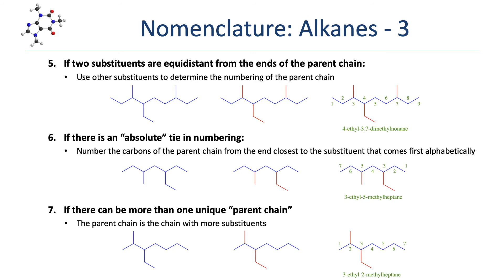When alphabetizing substituents, counter prefixes like 'di,' 'tri,' and 'tetra' are ignored. So ethyl comes before dimethyl alphabetically because we compare 'ethyl' to 'methyl,' not to 'dimethyl.' There is no such thing as a dimethyl group — dimethyl simply tells you there are two instances of methyl groups. We're alphabetizing the actual group names, which is why ethyl comes before dimethyl.